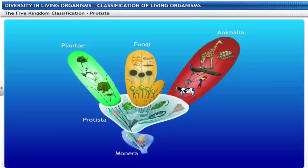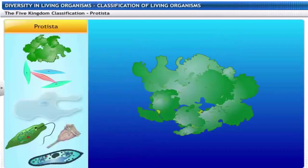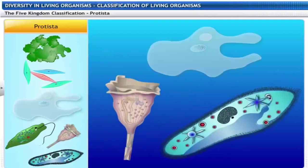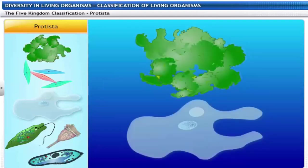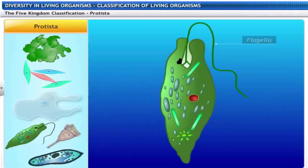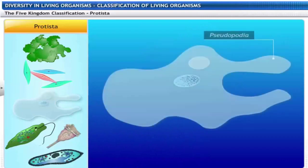Members of the kingdom Protista are algae, diatoms and protozoans. Protists include plant-like and animal-like organisms. Their mode of nutrition can be autotrophic or heterotrophic. They are unicellular and the simplest form of eukaryotes. Some protists move with whip-like flagella, hair-like cilia or finger-like pseudopodia.